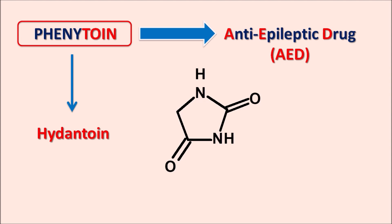Among the anti-epileptic drugs we know other categories like barbiturates, among them phenobarbital is one of the important drugs. But phenytoin is a hydantoin derivative with two phenyl rings at the fifth position — that's why phenytoin is a diphenyl hydantoin. Today we are going to discuss how this drug acts, what are the important precautions, side effects and clinical use.